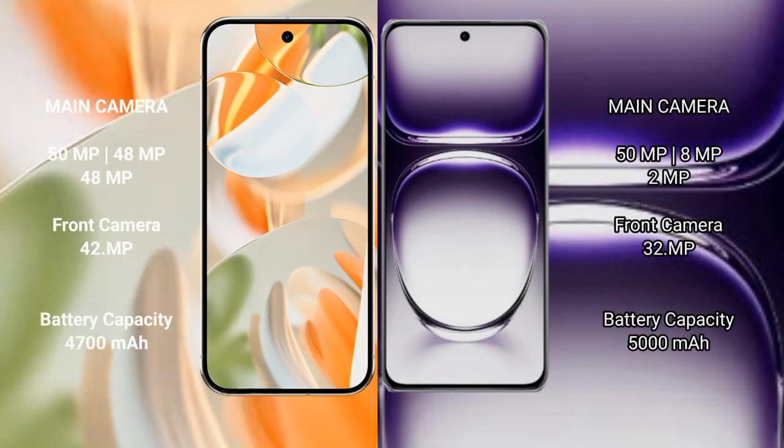The Google Pixel 9 Pro features a rear triple camera setup: 50MP plus 48MP plus 48MP, and a 42MP front camera. The Oppo Reno 12 also features a rear triple camera setup: 50MP plus 8MP plus 2MP, and a 32MP front camera. The Google Pixel 9 Pro has a 4500mAh battery with 27W fast charging support.